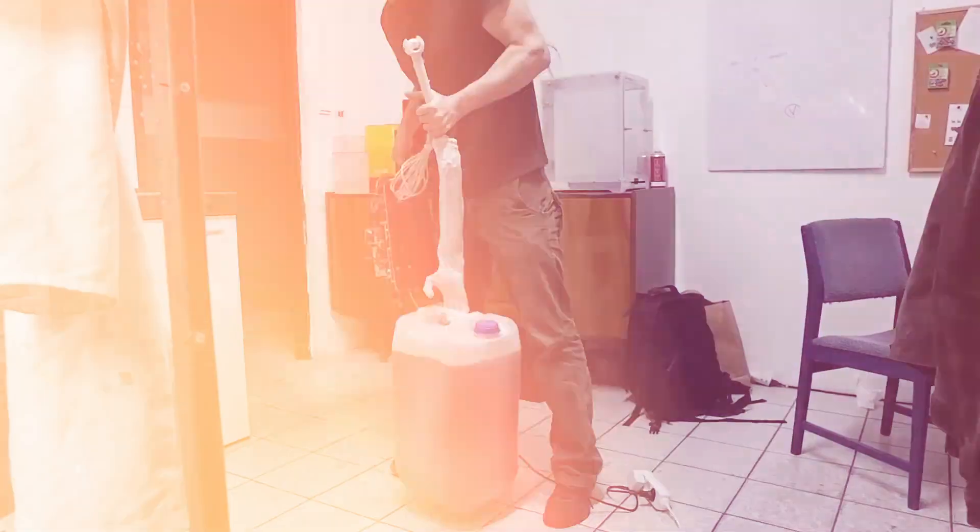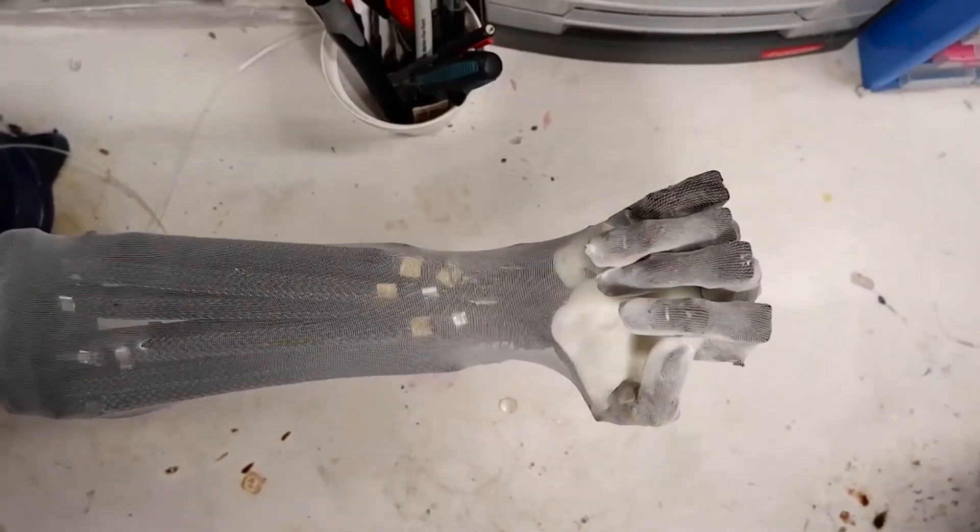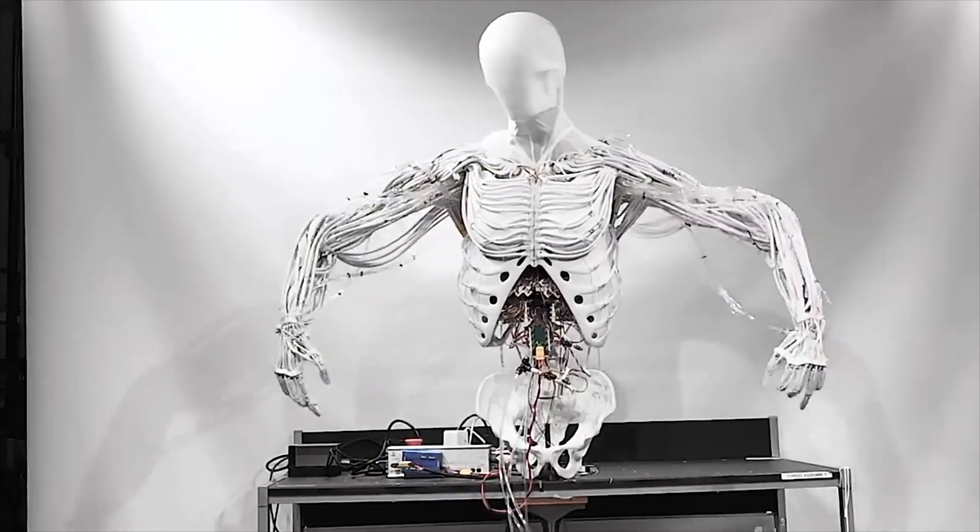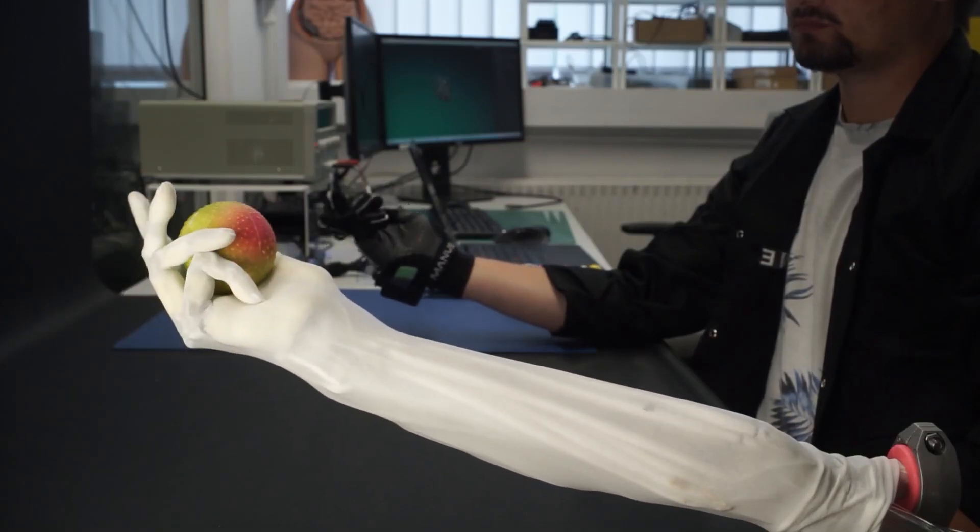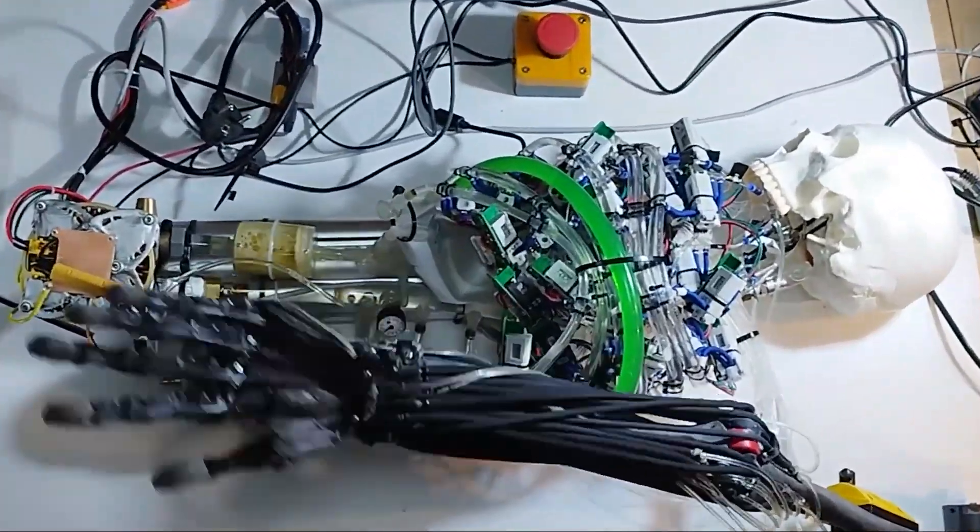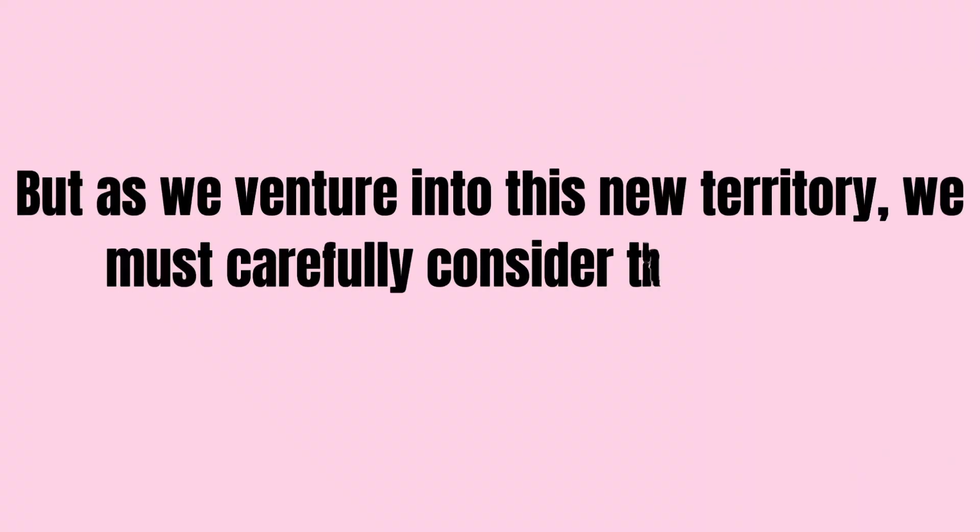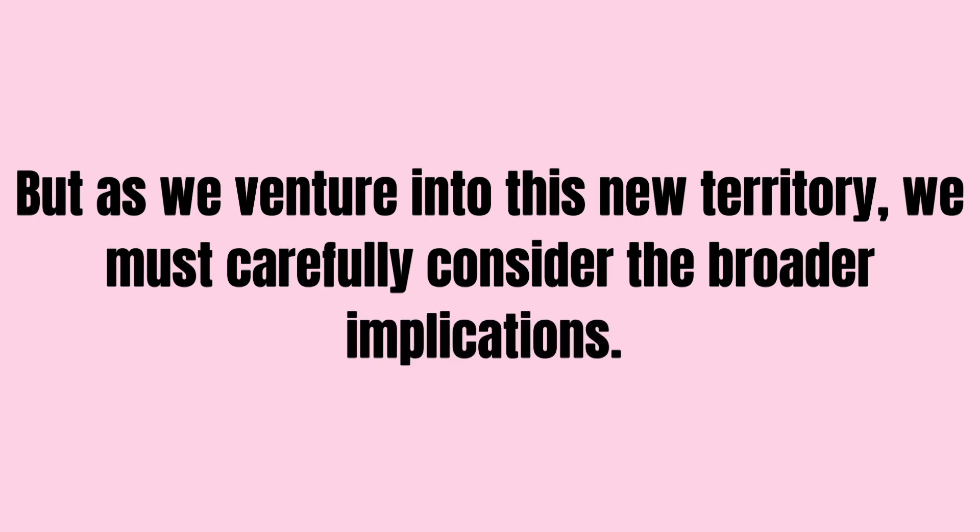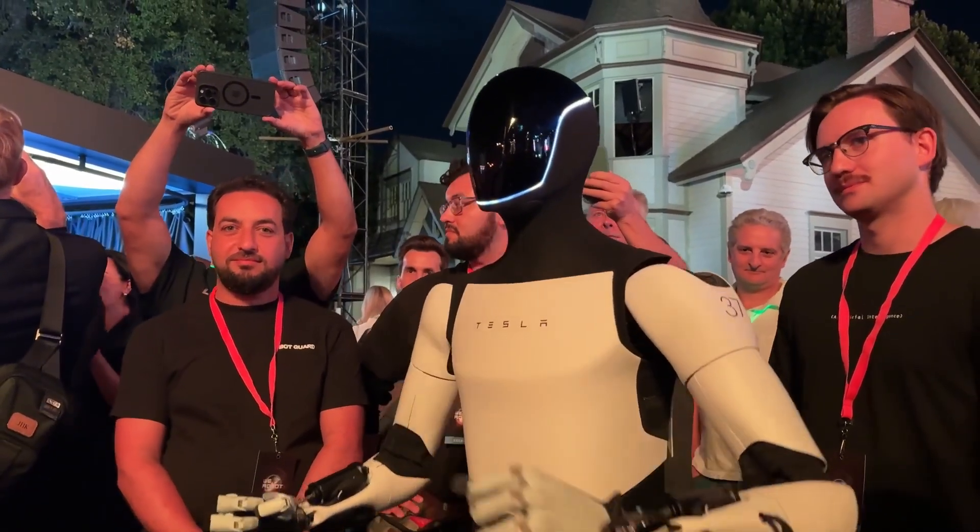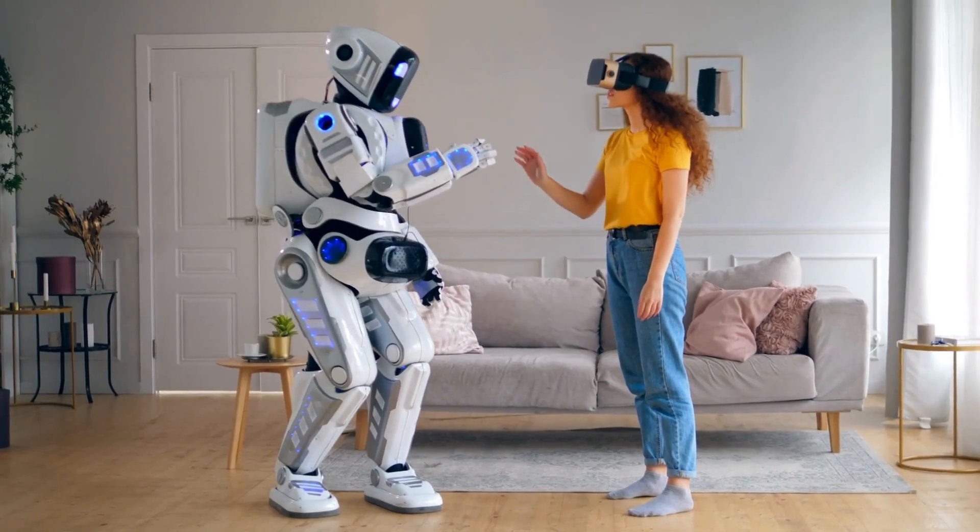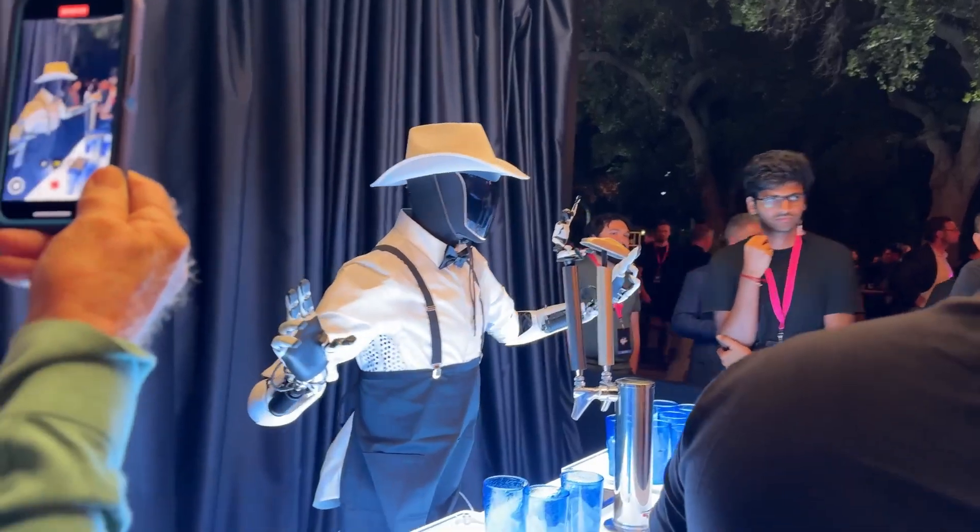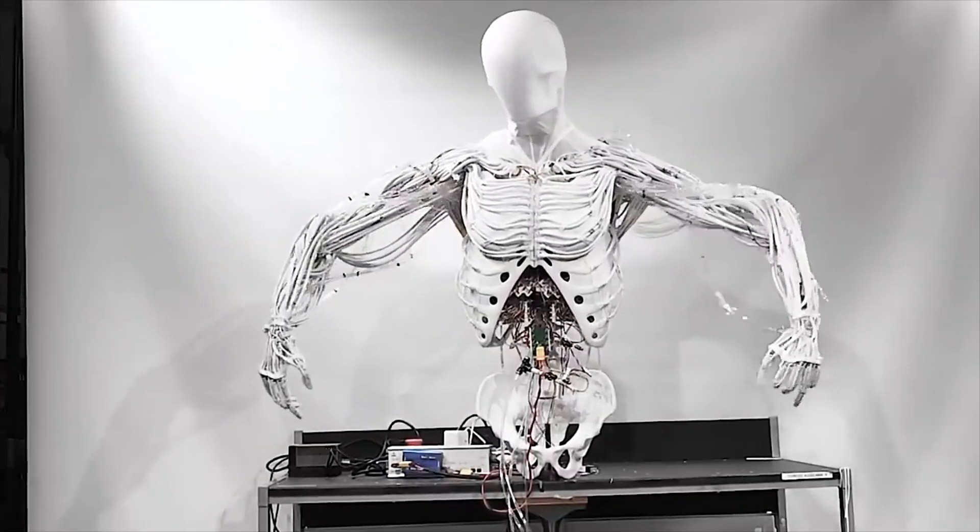Looking to the future, the Torso by Clone opens up fascinating possibilities while raising some important questions. The company's current work on bimanual manipulation training suggests that we're moving closer to seeing robots capable of complex two-handed tasks in our homes. But as we venture into this new territory, we must carefully consider the broader implications. The role of humanoid robots in society needs thoughtful examination, as does the development of comprehensive safety and control mechanisms. We'll need to address the psychological impact of increasingly human-like machines on society and establish robust ethical guidelines for their development and deployment.